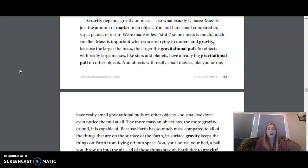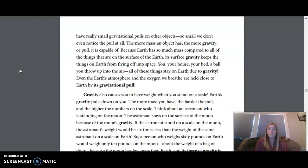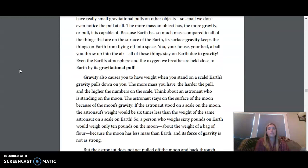Gravity depends greatly on mass. So what exactly is mass? Mass is just the amount of matter in an object. You and I are small compared to, say, a planet or a star. We're made of less stuff. So our mass is much, much smaller. Mass is important when you are trying to understand gravity because the larger the mass, the larger the gravitational pull. So objects with really large masses, like stars and planets, have a really big gravitational pull on other objects. And objects with really small masses, like you or me, have really small gravitational pulls on other objects. So small, we don't even notice the pull at all.